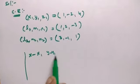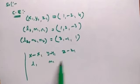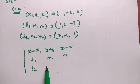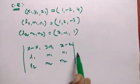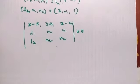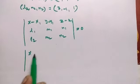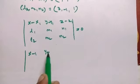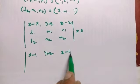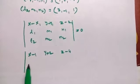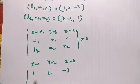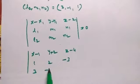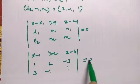x minus x1, y minus y1, z minus z1, L1, M1, N1, L2, M2, N2 equal to 0. So this type of determinant of x - 1, y minus, half minus 2, y + 2, z - 4, L1, M1, N1, 1, 2, -3, L2, M2, N2, 3, -1, 1, equal to 0.